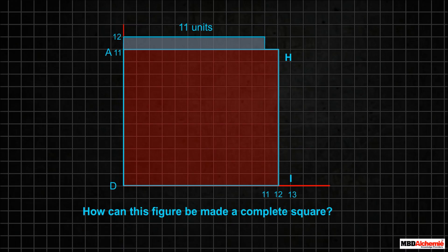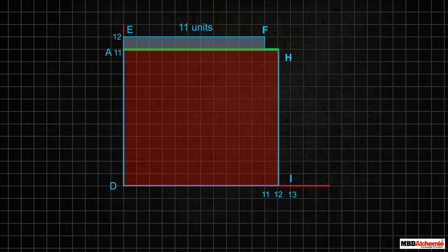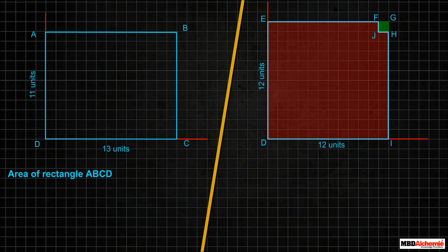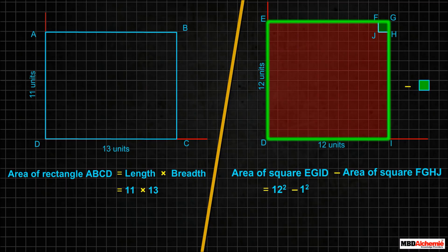Observe the figure formed. Is it a square? No, it is not a complete square as there is something missing. Measure this missing space — this space can be filled by another square of 1 unit. As the rectangle fixed along the length is 11 units long, whereas the length of the shape left is 12 units, and the breadth of the rectangular cutout is also 1 unit. The area of rectangle ABCD is length times breadth, that is 11 × 13. This is equal to the area of square EGID minus the area of square FGHJ, that is 12² − 1².